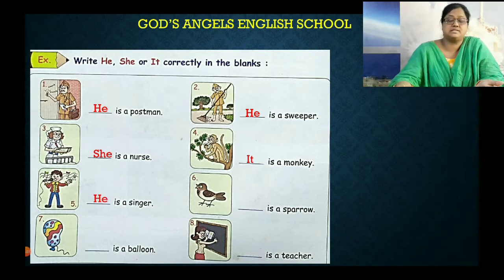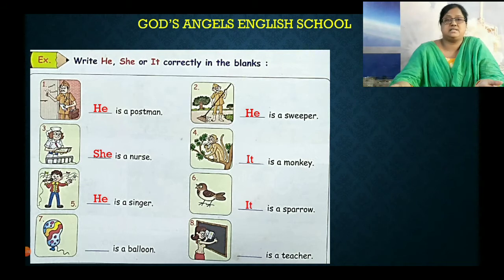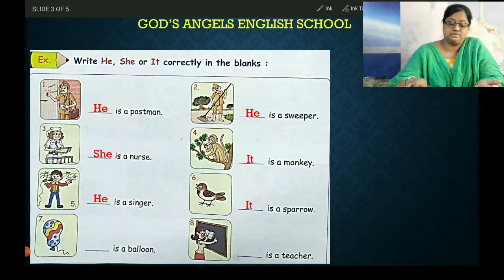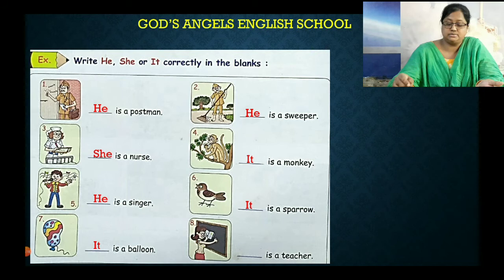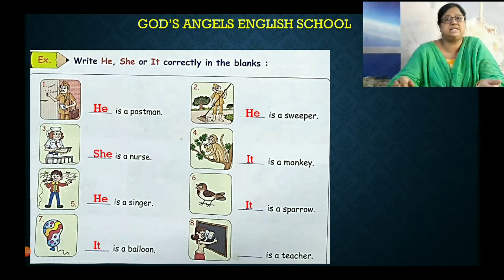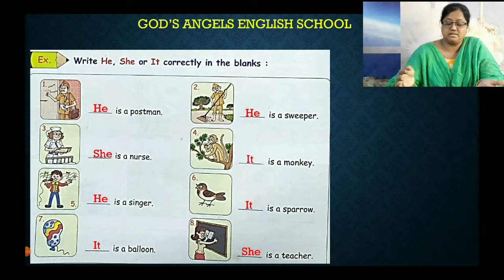He is a singer. It is a sparrow. Balloon is a thing — तो वहाँ it use करना है. It is a balloon. Teacher is a woman or a girl — तो वहाँ she use करना है. She is a teacher.